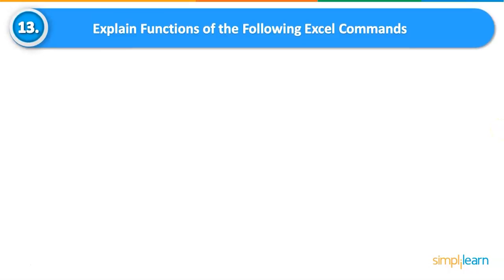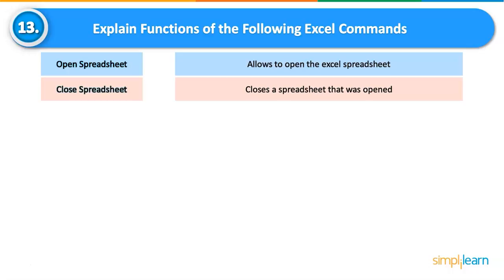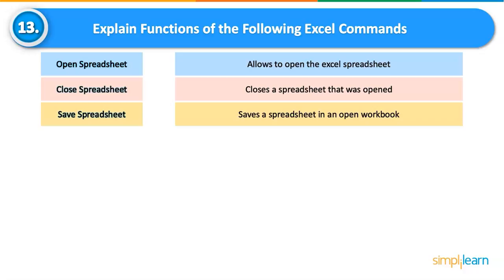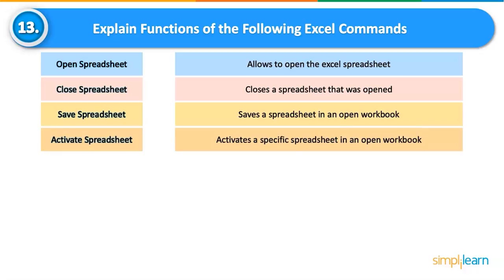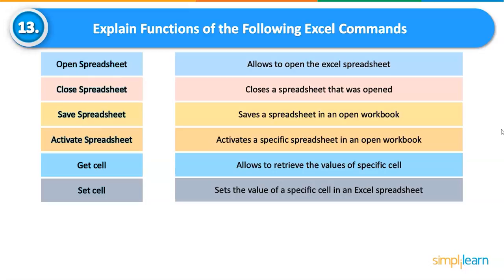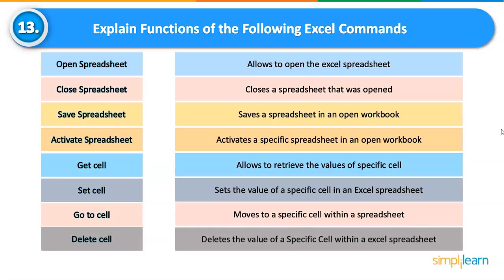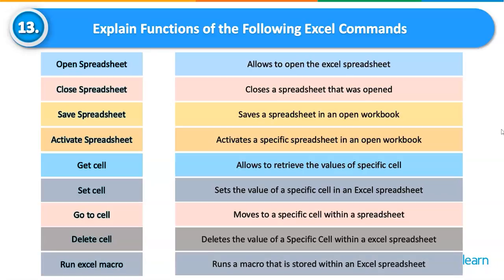Explain functions of the following Excel commands. Open Spreadsheet: allows opening an Excel spreadsheet. Close Spreadsheet: closes a spreadsheet that was opened. Save Spreadsheet: saves a spreadsheet in an open workbook. Activate Spreadsheet: activates a specific spreadsheet in an open workbook by index or sheet name. GetCell: retrieves the values and range of a specific cell. SetCell: sets the value of the active or a specific cell; you can assign a variable to the cell value. GoToCell: moves to a specific cell. DeleteCell: deletes the value of a specific cell. RunExcelMacro: runs a macro stored within an Excel spreadsheet by specifying the macro name and parameters.